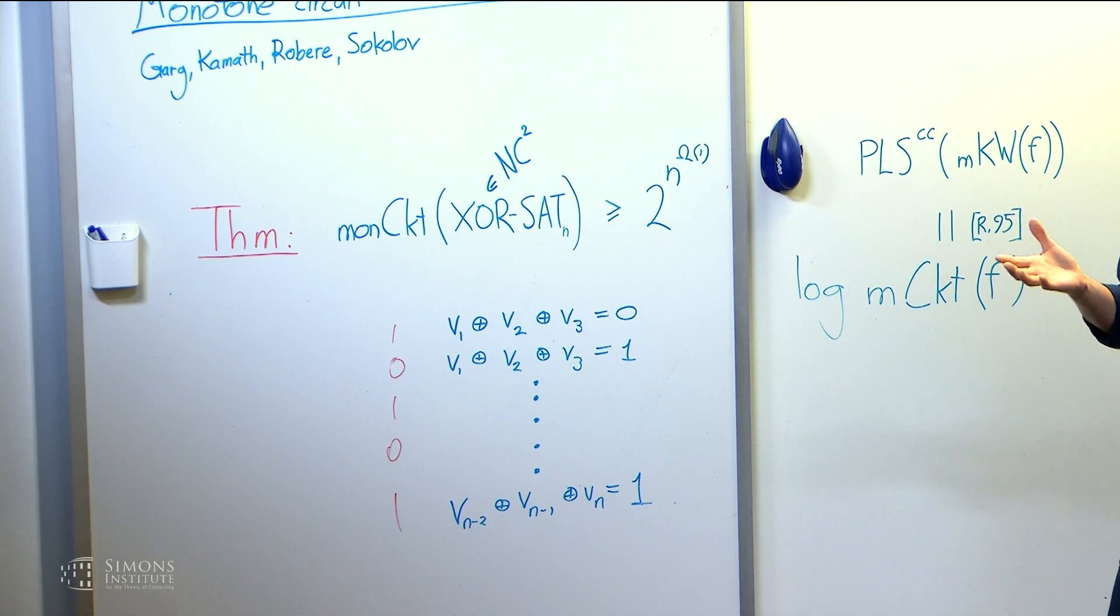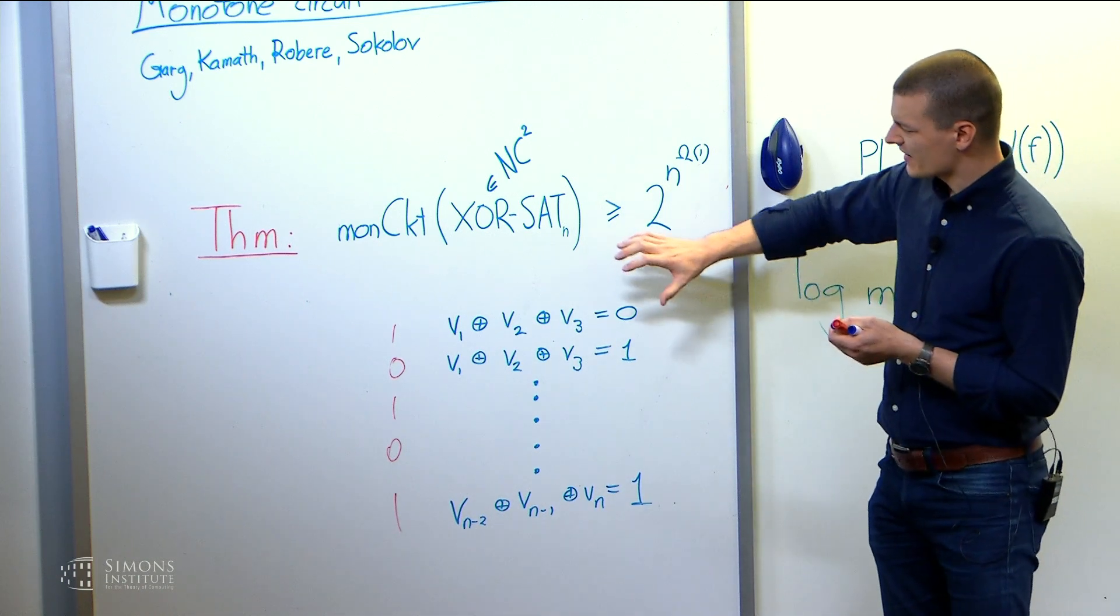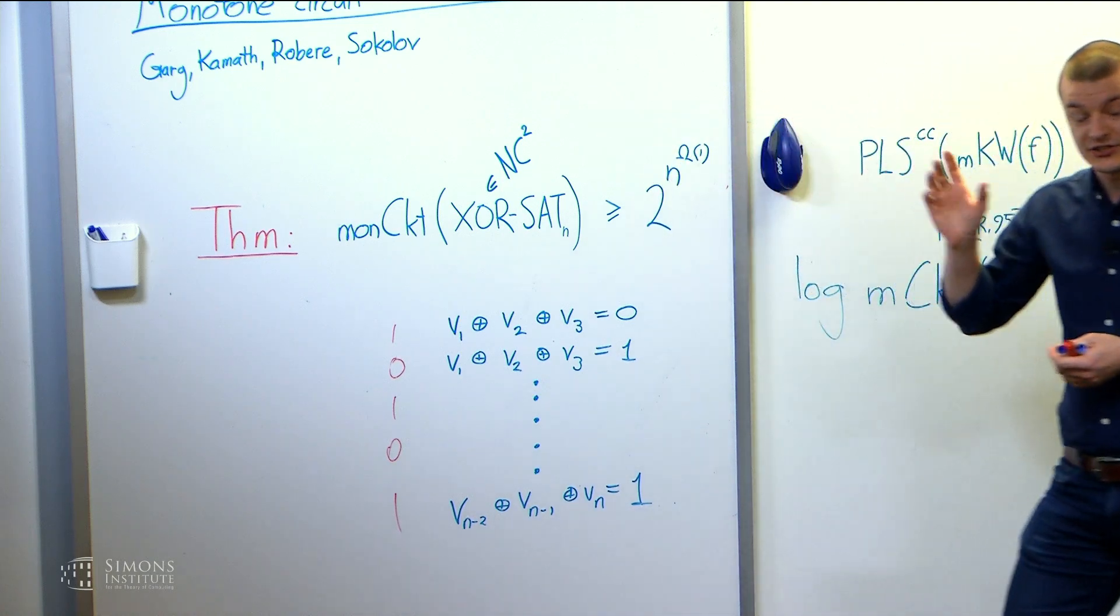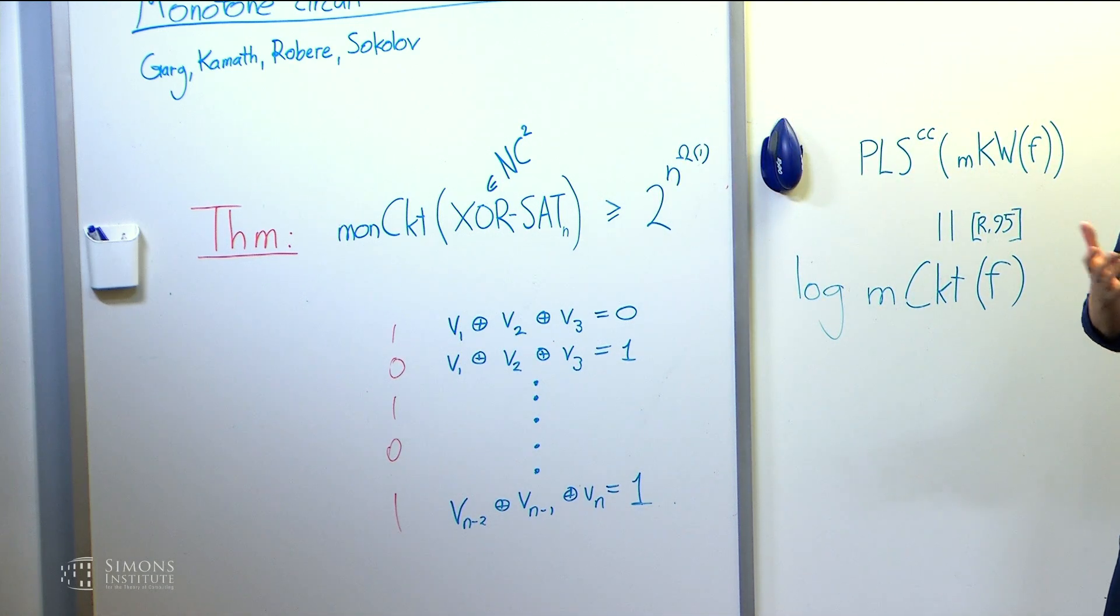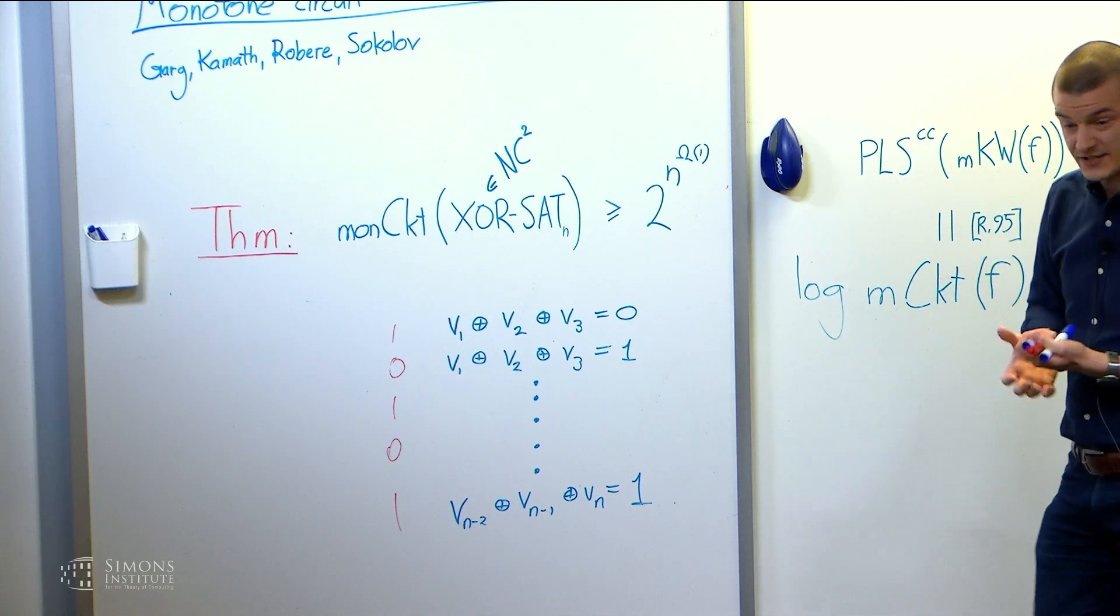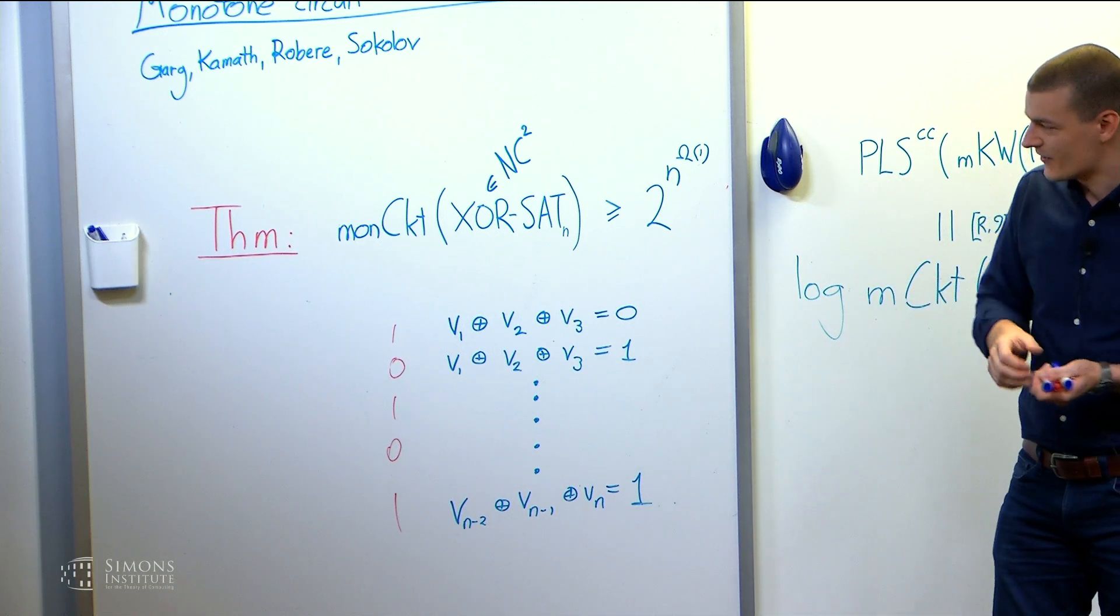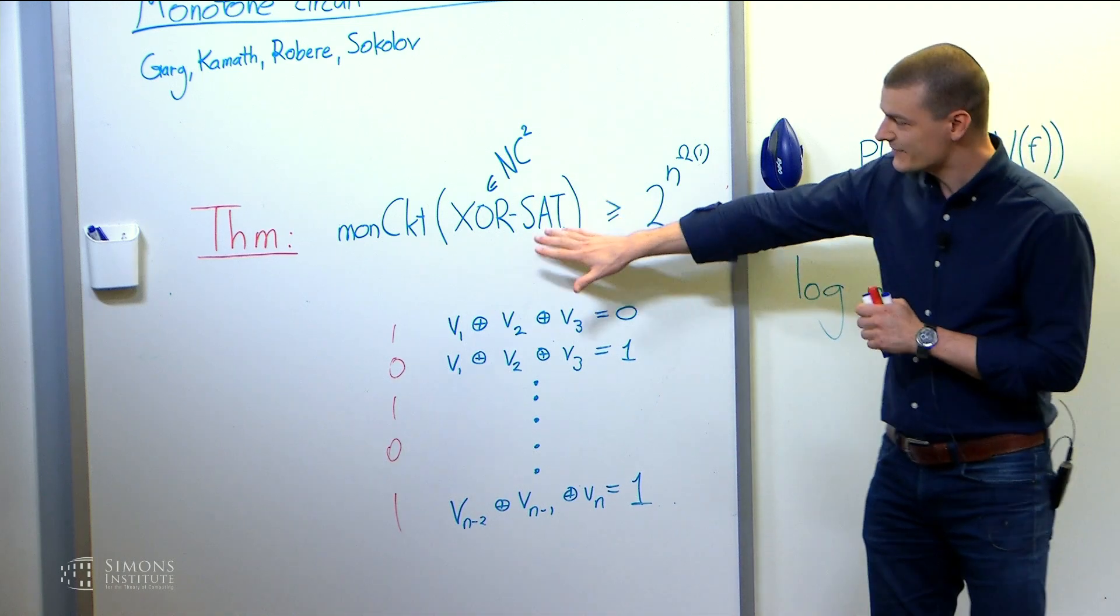So you could interpret this as, oh, that's interesting. It's a huge monotone versus non-monotone separation. I think the previous example, the only one I know of is a Tardos's function. So that's some function you define out of the Lovász Theta function for graphs, and to compute that, you need to solve a semi-definite program. So it's in P, but we don't know of better upper bounds for this function. Well, here's an even easier function.